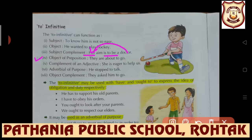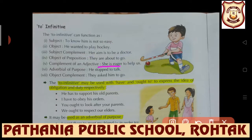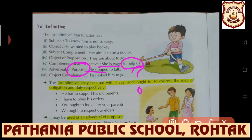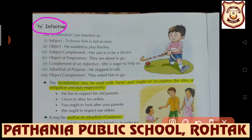Next use is object of preposition - 'about' is the preposition here and 'to go' is the to-infinitive used. As complement of an adjective: 'She is eager to help us.' As adverbial of purpose: 'He stopped to talk' - there is a purpose, why he stopped. So for adverbial of purpose, to-infinitives can be used.